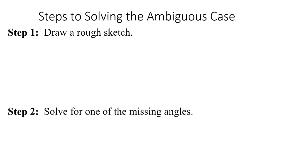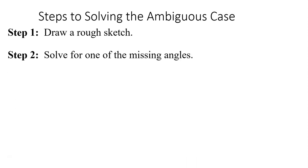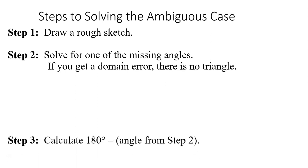So sort of a recap, and this is in the PowerPoint notes, how do you figure out the ambiguous case? Well, the first thing is draw yourself a picture, solve for one of the missing angles. It'll be obvious which one, it'll be the only one that you have an opposite side for, but not the angle. If you get a domain error, then there's no triangle. And domain error is another way of saying sine of the angle equals more than one or less than negative one.